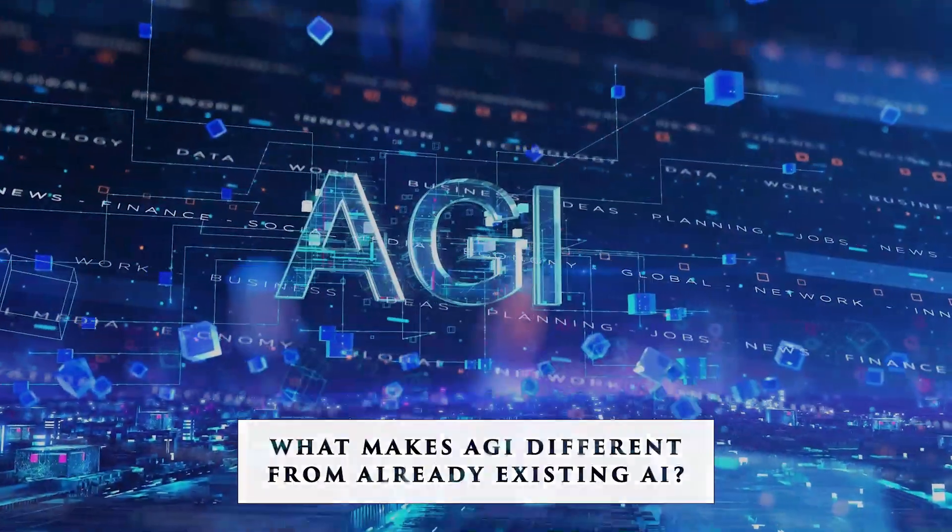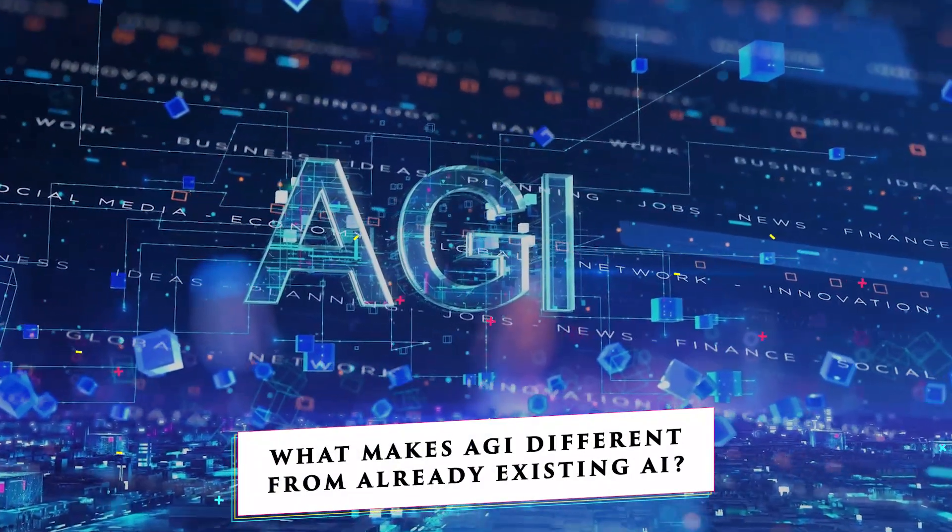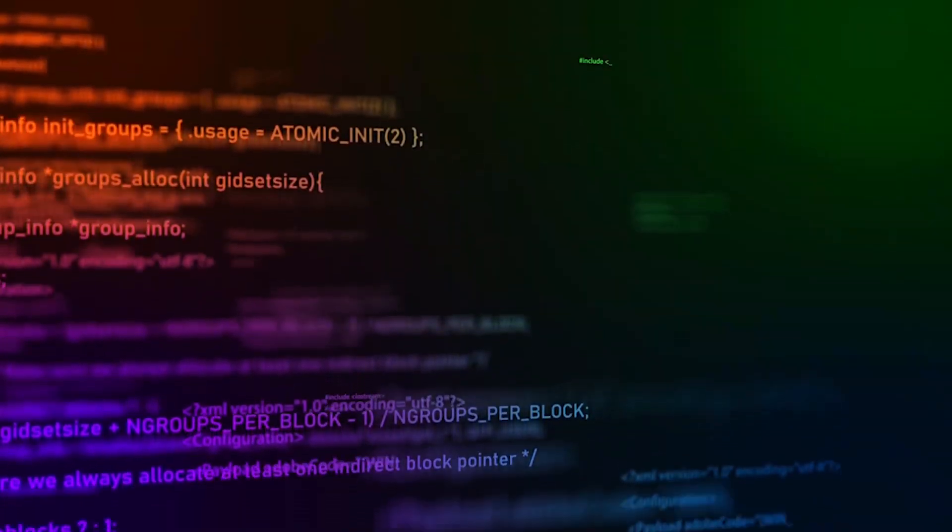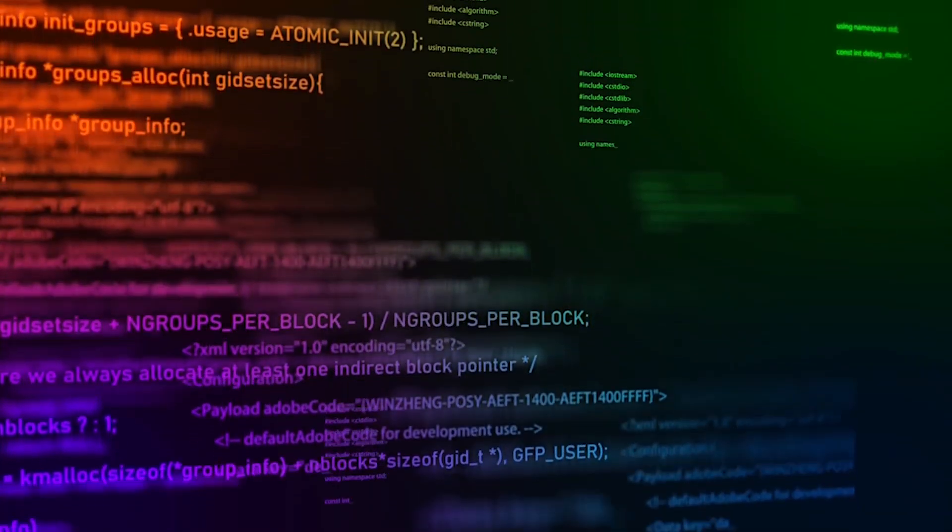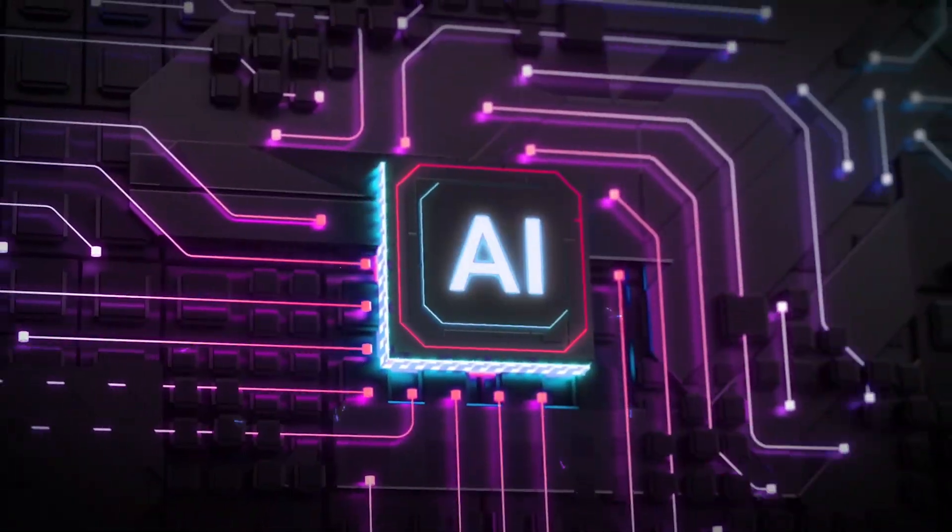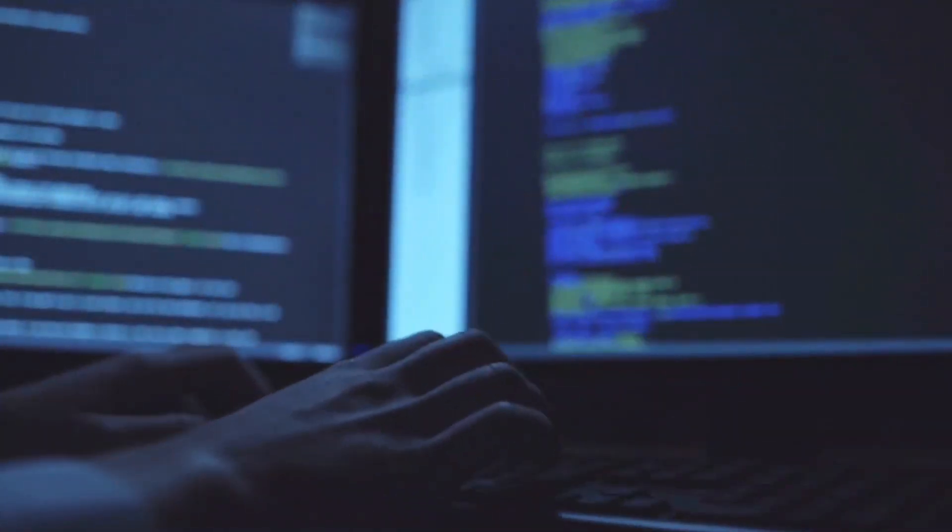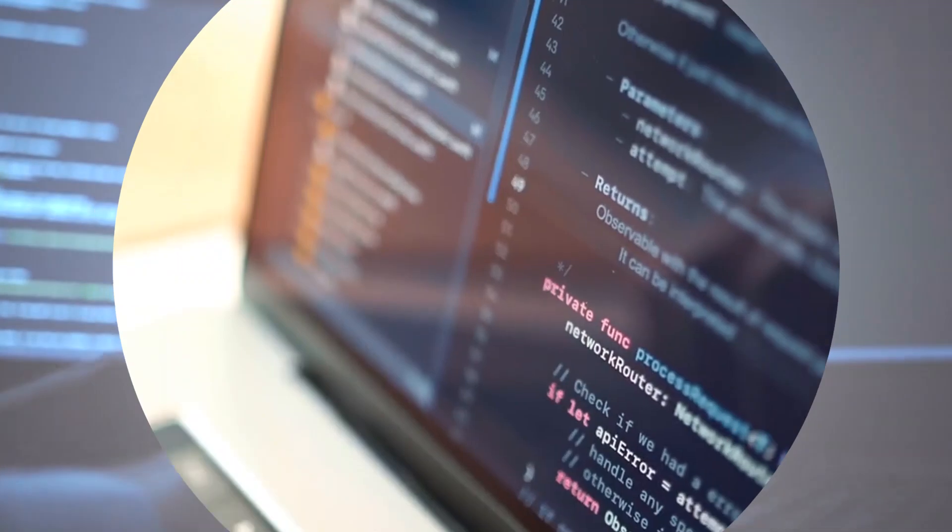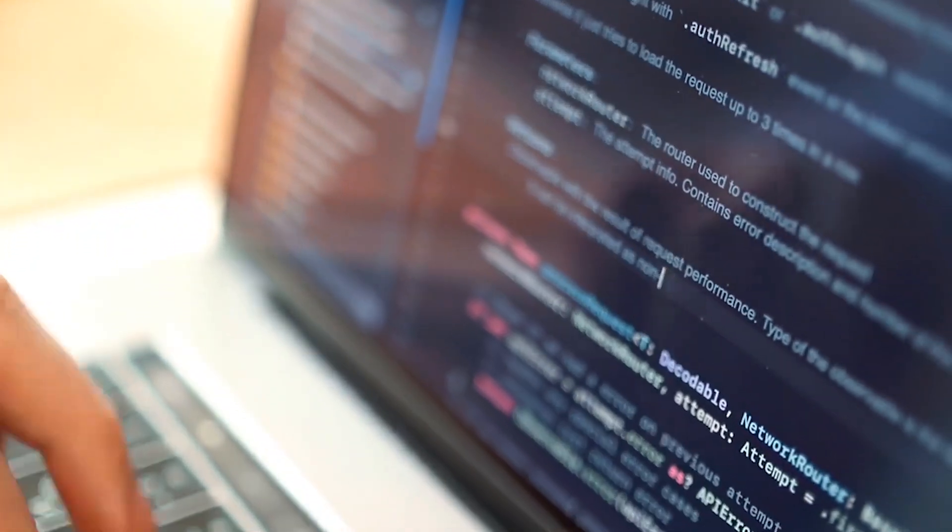What makes AGI different from already existing AI? At its core, the distinction between Artificial General Intelligence and existing AI systems lies in their scope, flexibility, generalization, autonomy, and potential for creativity and self-improvement.